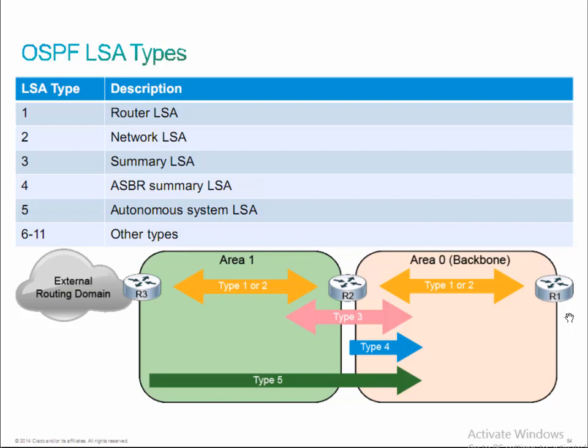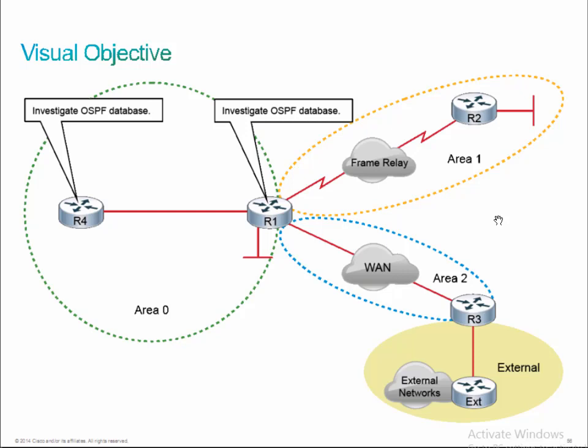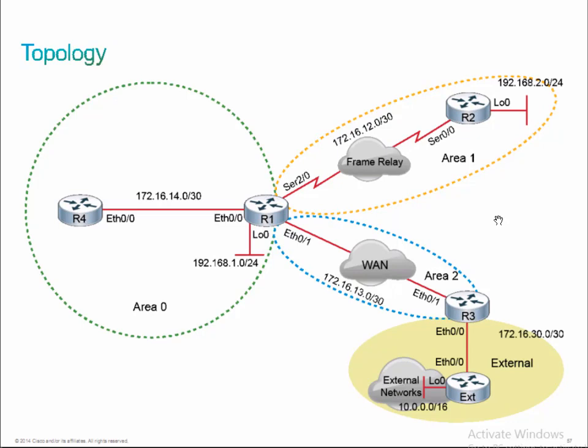We're going to go ahead and get into discovery number 10. In this particular case, we're actually going to take a look at the link state database. We have a standard OSPF design with our backbone area. R1 is our ABR connecting area 1 and area 2, similar to the topology from discovery number 9. But we're adding an external set of routes being redistributed into OSPF through router 3, so R3 is acting as an ASBR.